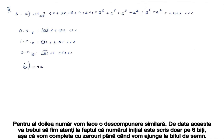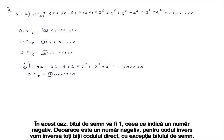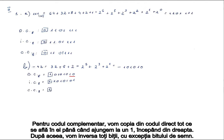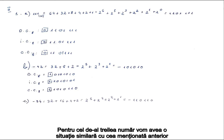For our second number, we're going to do a similar decomposition. This time, we're going to have to pay attention to the fact that the initial number is only written on 6 bits, so we're going to complete with 0s until we reach the sign bit. The sign bit will be 1 in this case, denoting a negative number. For inverse code, we will reverse all the direct code bits with the exception of the sign bit. For the complementary code, we will copy from direct code everything until we reach a 1 starting from the right, then reverse all the bits with the exception of the sign bit. For the third number, we will have a similar situation.